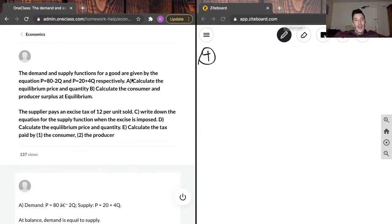Part A reads, calculate the equilibrium price and quantity, and Part B reads, calculate the consumer and producer surplus at equilibrium.